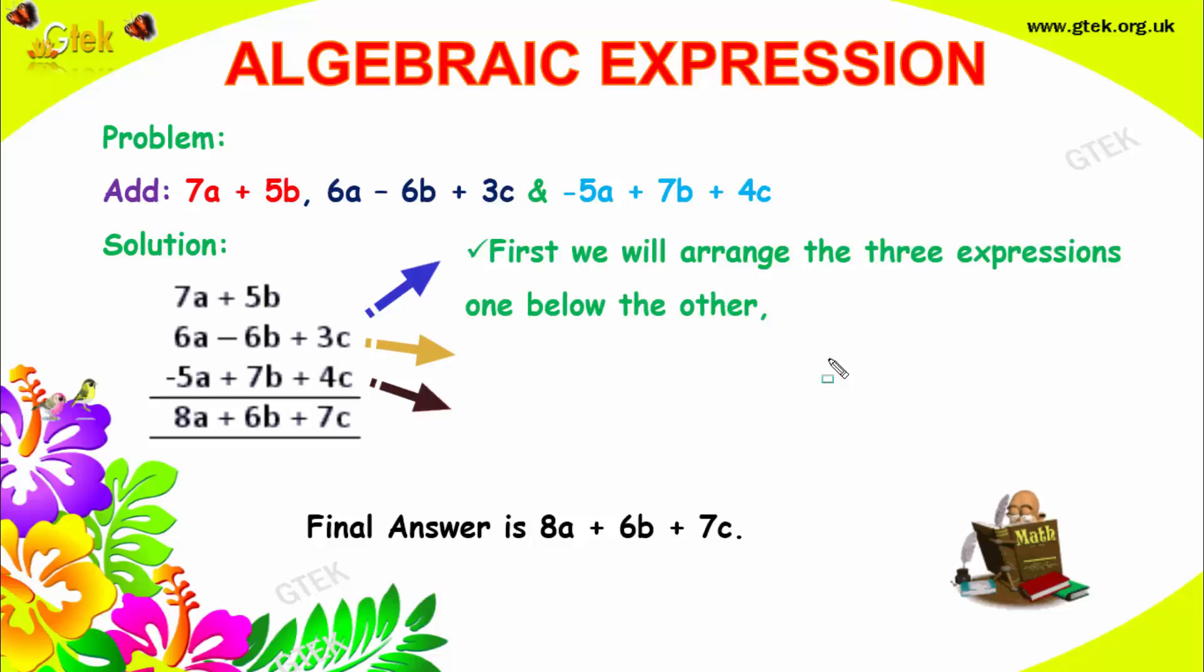First we will arrange the three expressions one below the other, like here one, two, and three. And afterwards, placing the like terms in the same column. You have to place the like terms in the same column.